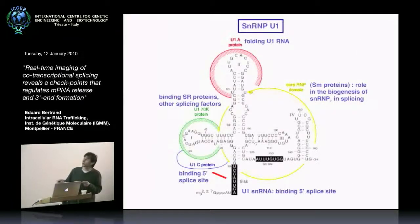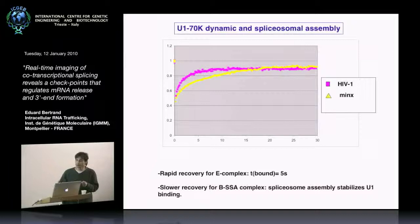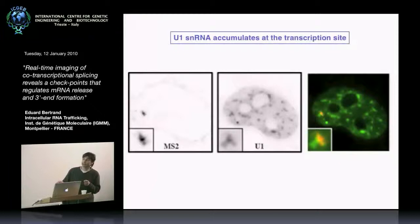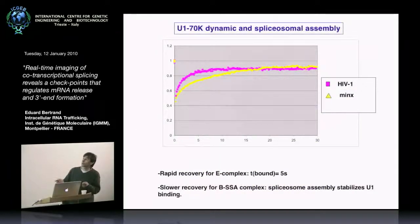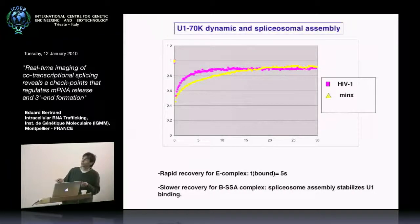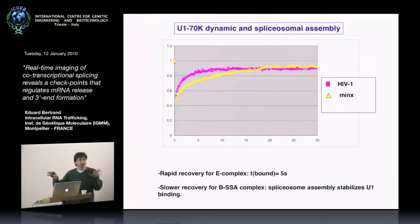To look at U1 dynamics — U1 has three specific proteins: U1A, U1-70K, and U1C — we used a GFP fusion with U1-70K. We performed FRAP experiments using U1-GFP at the transcription sites of the HIV-1 RNA. In the case of the HIV-1 reporter, we get a fast recovery of the protein — on the timescale of seconds, about six to seven seconds — meaning the snRNP has a high turnover on the pre-mRNA. For the Minx reporter where you do get spliceosome assembly, we get a slower recovery, meaning the snRNP stays longer because it interacts with other spliceosome components, stabilizing the snRNP on the pre-mRNA.